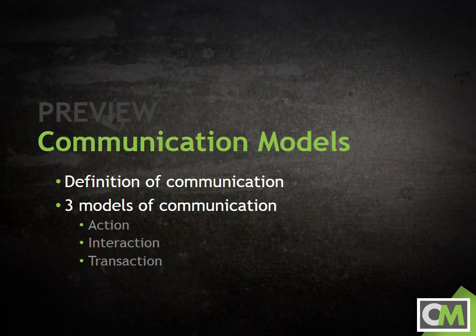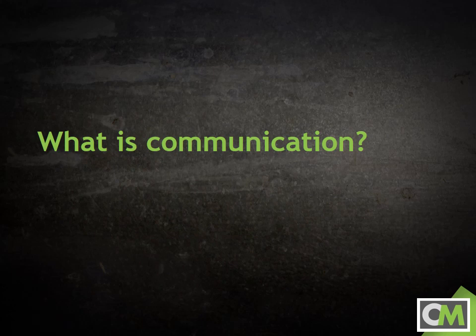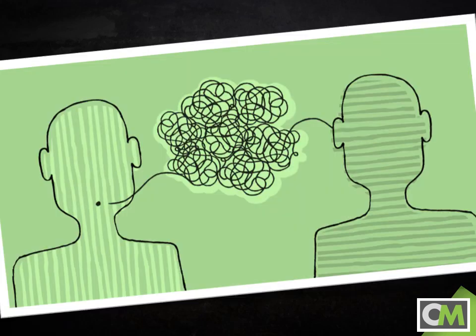In this video, we'll discuss the definition of communication and a few of the fundamental characteristics of communication. We'll also explore three models of the communication process. What is communication? The short answer is that communication is the process through which we attempt to make meaning by sending and receiving messages.